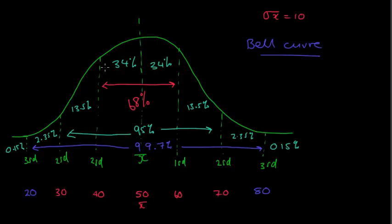So how I got that was: this width here was 68%, so we divide by 2, which gives us 34% either side. We know the difference between 95% and 68%, then divide by 2 to get the 13.5%, and the same thing for the 2.35%, and the same thing for 0.15%.